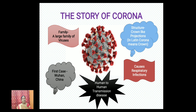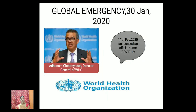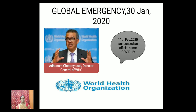It causes respiratory infections. It is a transmission disease which occurs from human to human. The first case was identified in Wuhan, China. As we all know, the whole world is affected with this coronavirus, and hence the World Health Organization announced a global emergency on 30th January 2020.